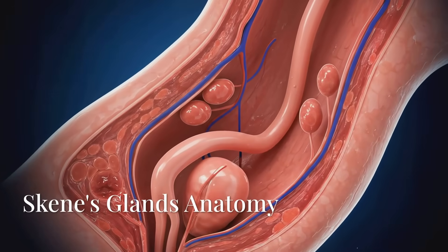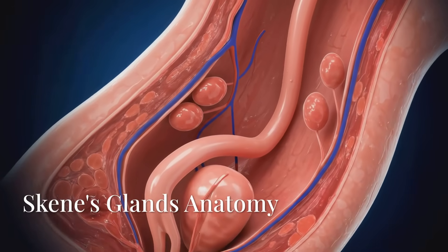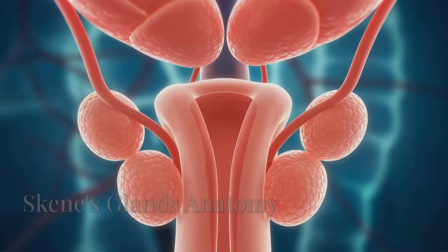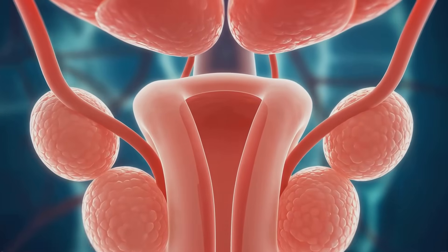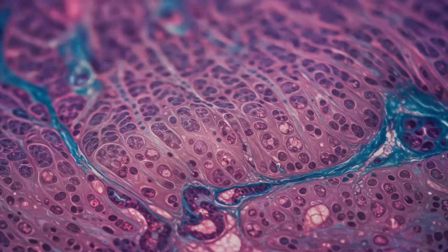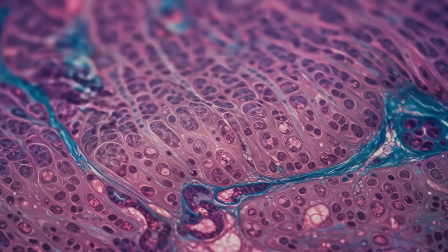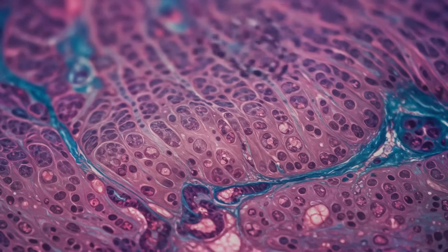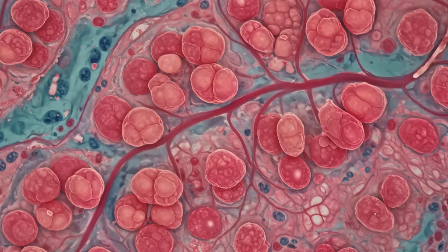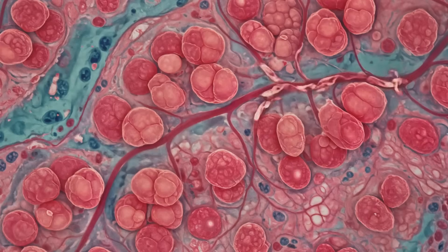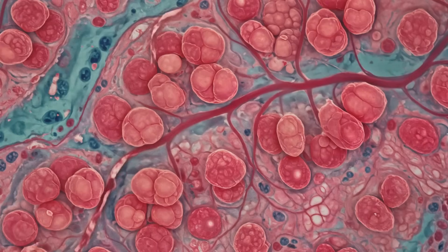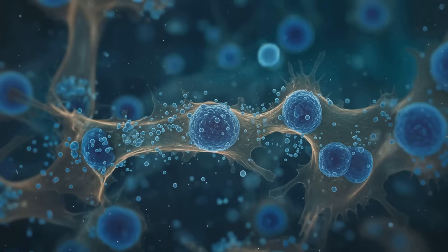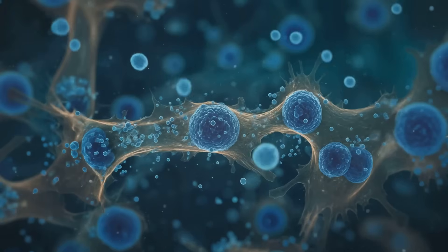Skeene's glands, also known as the paraurethral glands, are situated around the urethra. During arousal, parasympathetic stimulation triggers Skeene's glands to secrete a clear, watery fluid into the urethra, driven by nitric oxide signaling.